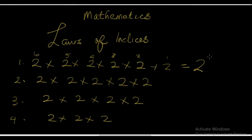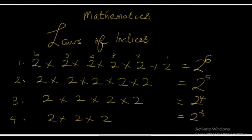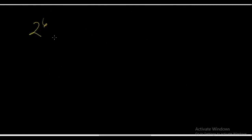So this number can be expressed as 2 raised to the power 6. This one can be expressed as 2 raised to the power 5. This one can be expressed as 2 raised to the power 4. And this last one can be expressed as 2 raised to the power 3. Alright, so we have expressed these arrays in the form of 2 raised to the power 6, 2 raised to the power 5, 2 raised to the power 4, and 2 raised to the power 3.